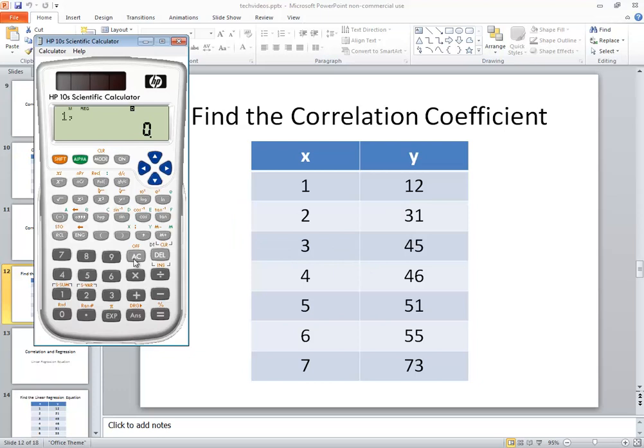So I'll do 1, 12, and then M+. Then I'll do 2, 31, M+. Then I'll do 3, 45, M+. Then I'll do 4, 46, M+. Then I'll do 5, 51, M+. And then I'll do 6, 55, M+. And then 7, 73, and then M+. And it comes up and tells us that we got N is equal to 7. So we got 7 pairs, which is what I just entered. So that's kind of a check right there.